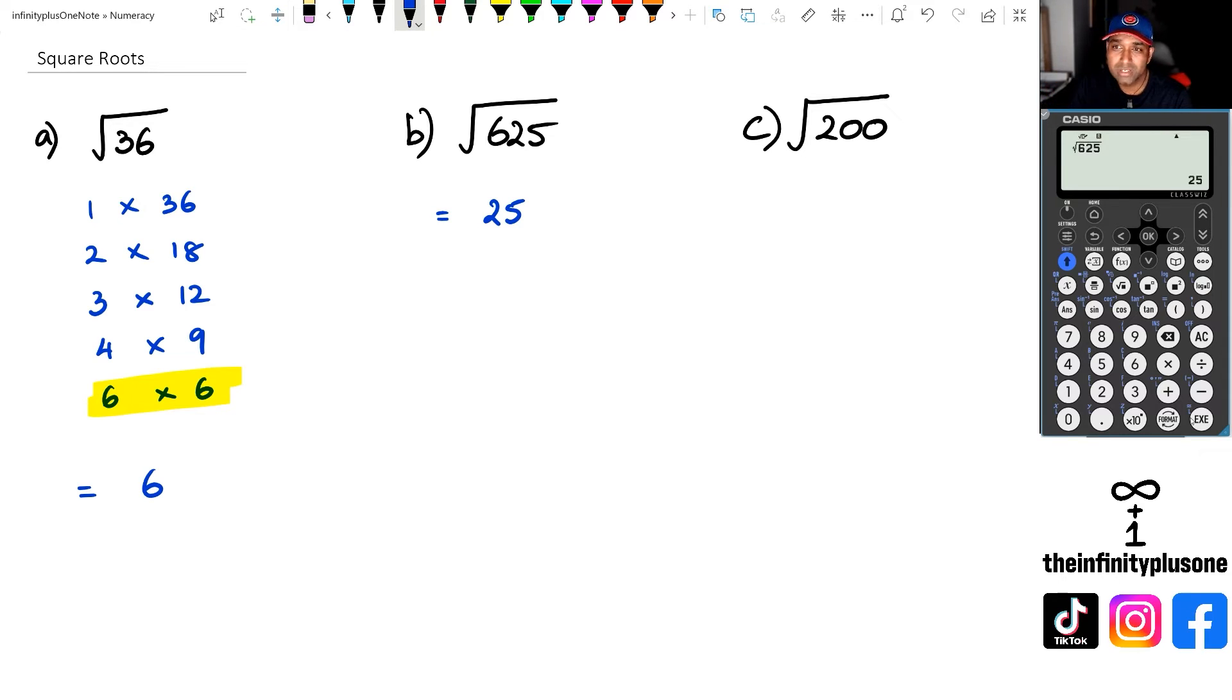Which means when you take a square root of that number, you're going to get a nice beautiful number. But if you look at square root of 200, so if I do square root of 200, I'm going to get this 10 square root of 2. Don't panic.